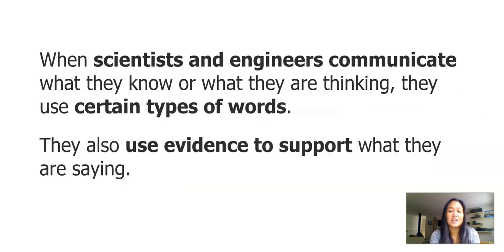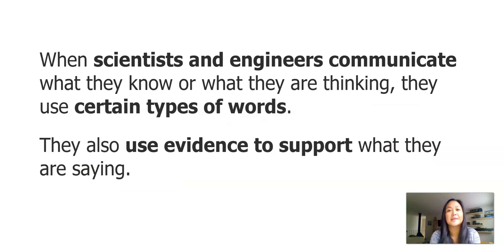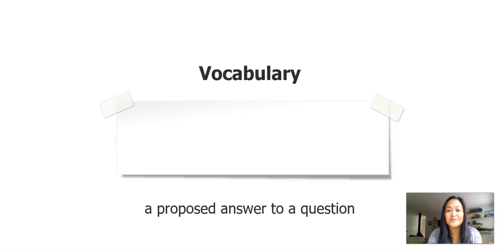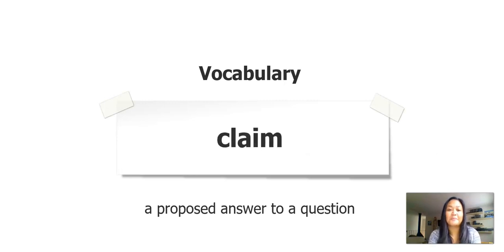Scientists and engineers communicate what they know or what they're thinking. They use certain types of words, and they also use evidence to support what they are saying. Here's our first vocabulary word for today that we will use: claim — a proposed answer to a question.